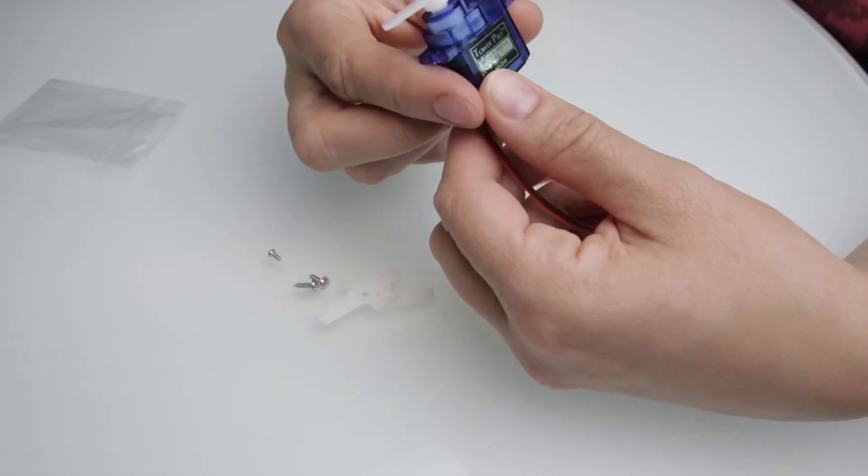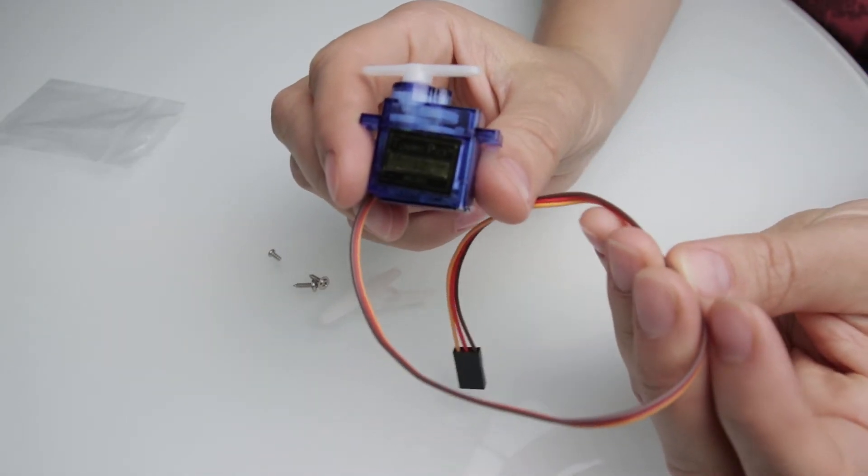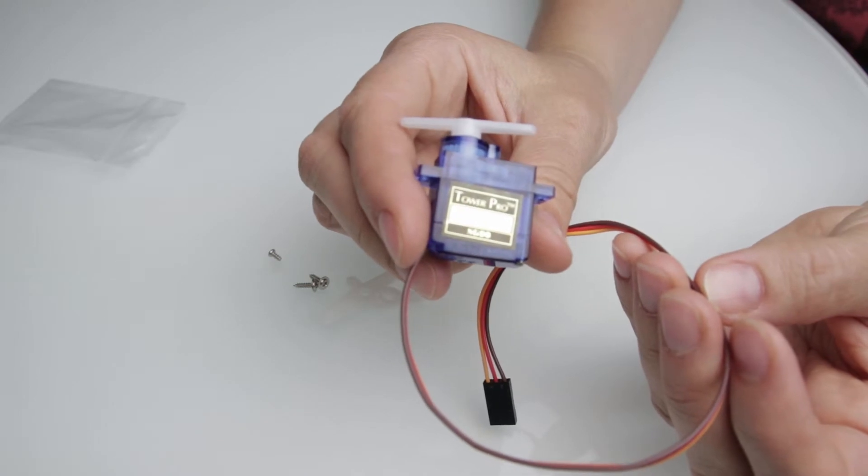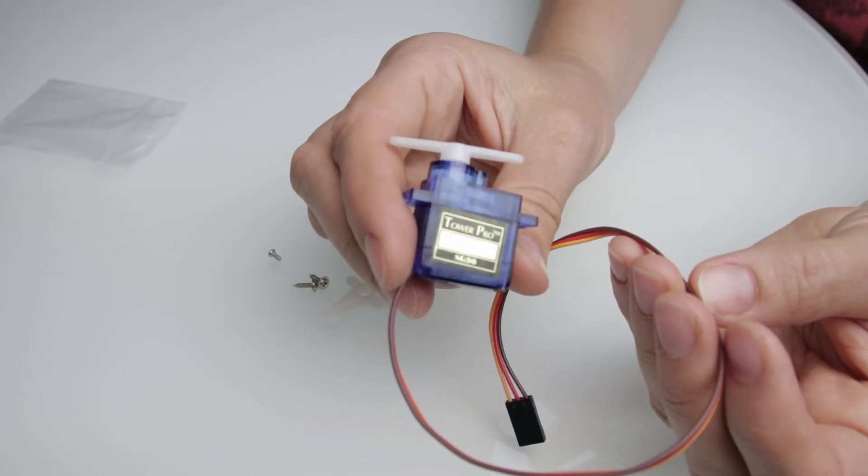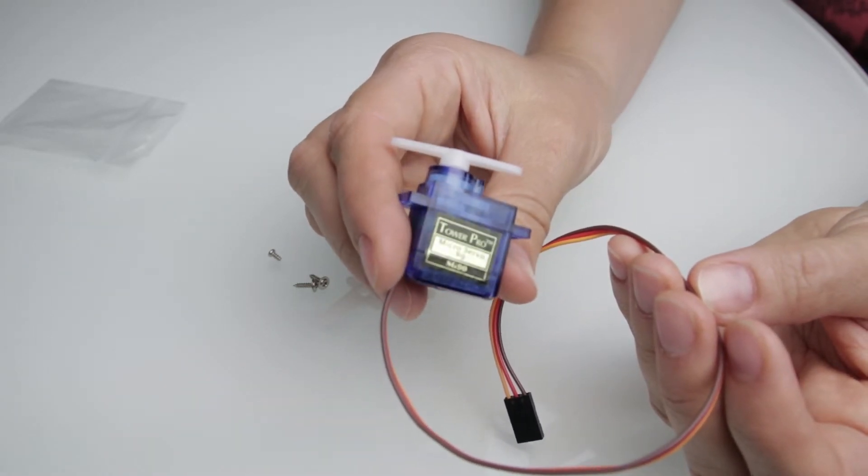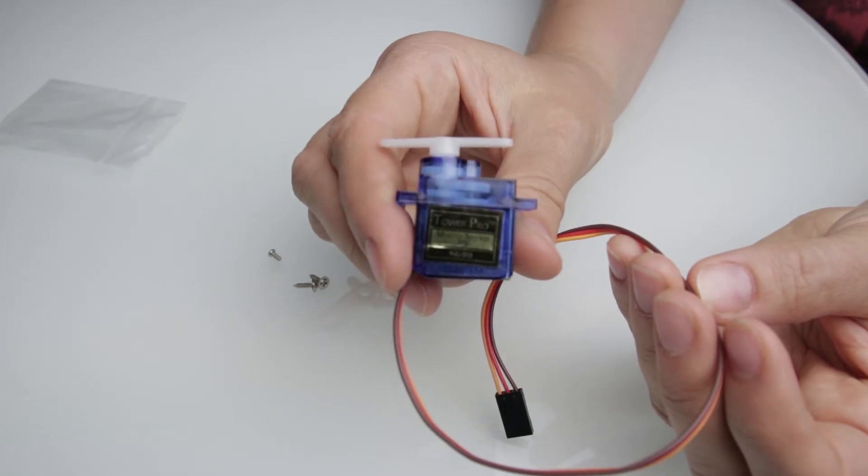Hi guys! In this video let's take a look at how a servo motor works. I will first connect the servo and let it sweep back and forth automatically, then add a potentiometer to control the position of the servo manually.